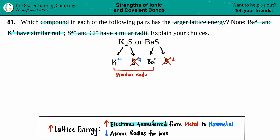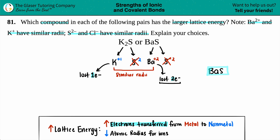Barium is in group 2, so it has a +2 charge — and that's exactly right, otherwise the problem couldn't be solved. Potassium has a +1 charge, meaning it lost one electron, while barium has a +2 charge, meaning it lost two electrons — both transferred to the sulfur. The more electrons transferred, the greater the lattice energy. Since two is greater than one, BaS transfers more electrons and therefore has the greater lattice energy compared to K₂S.